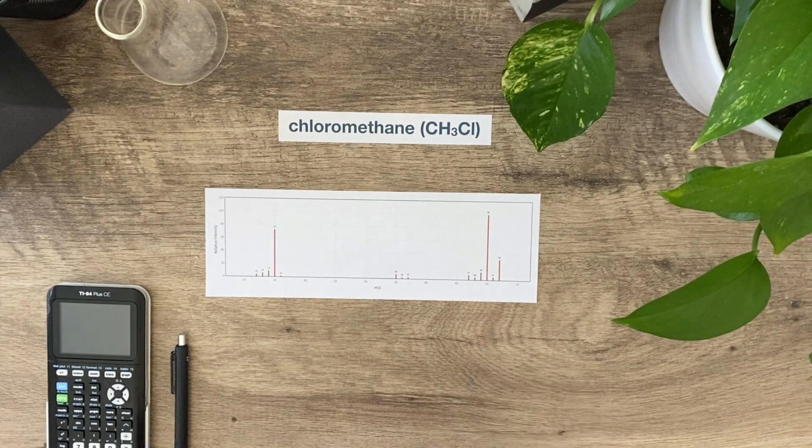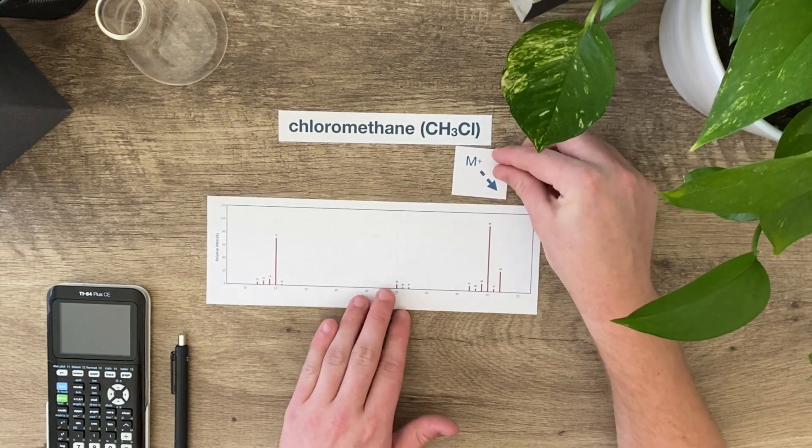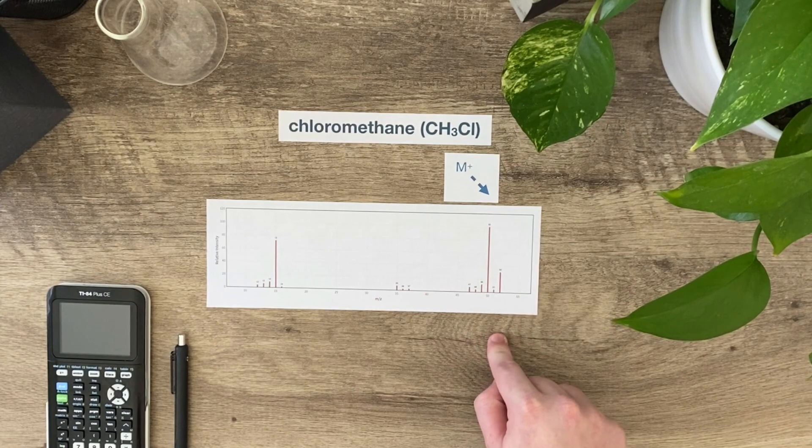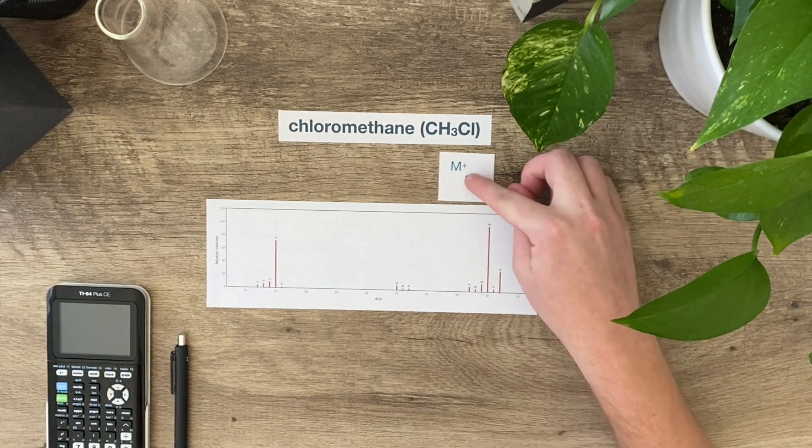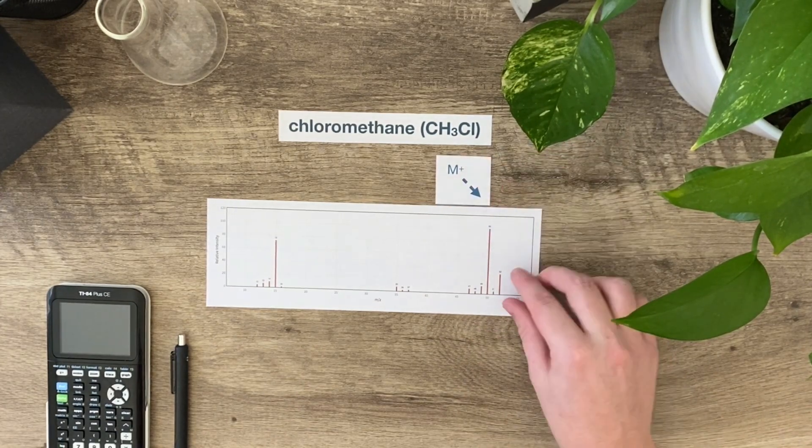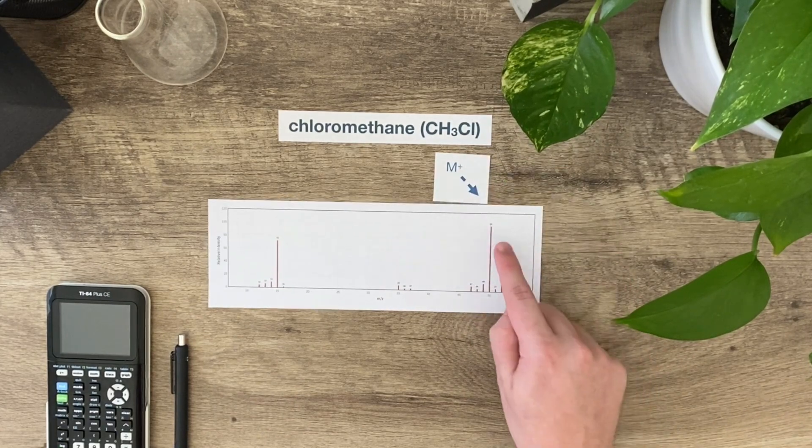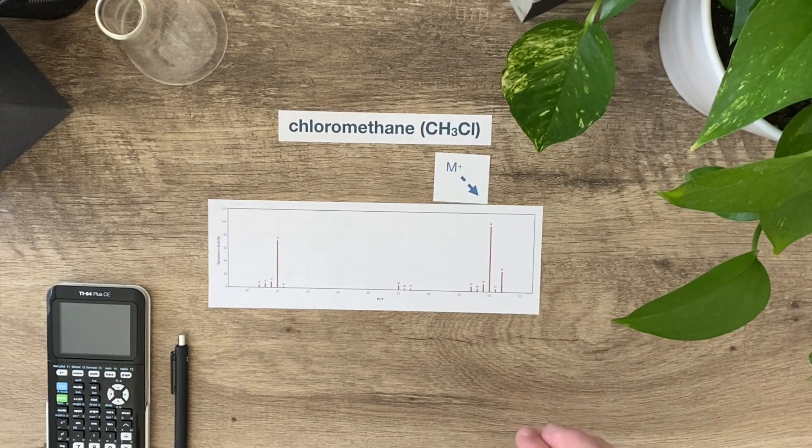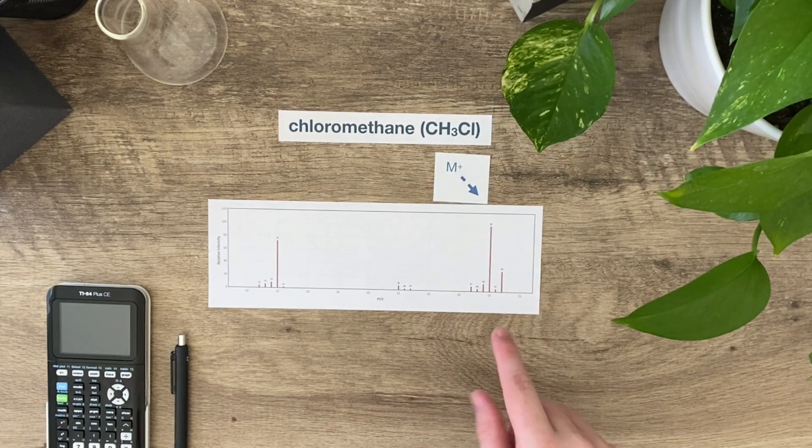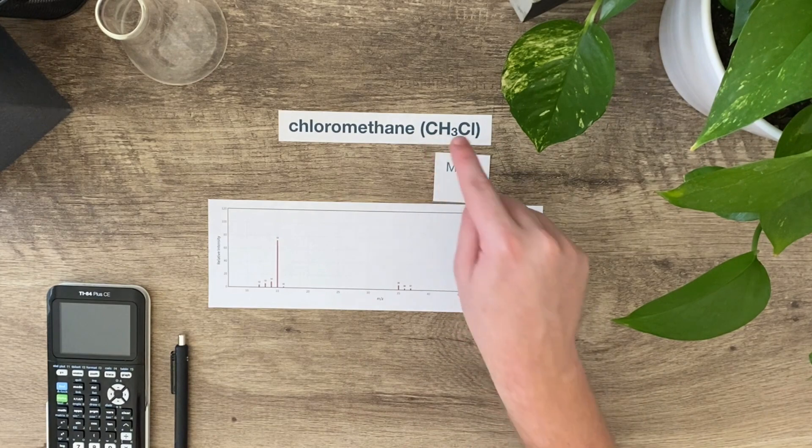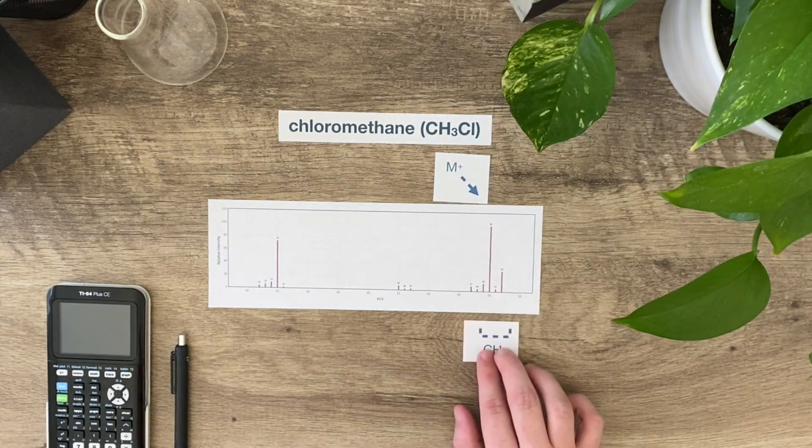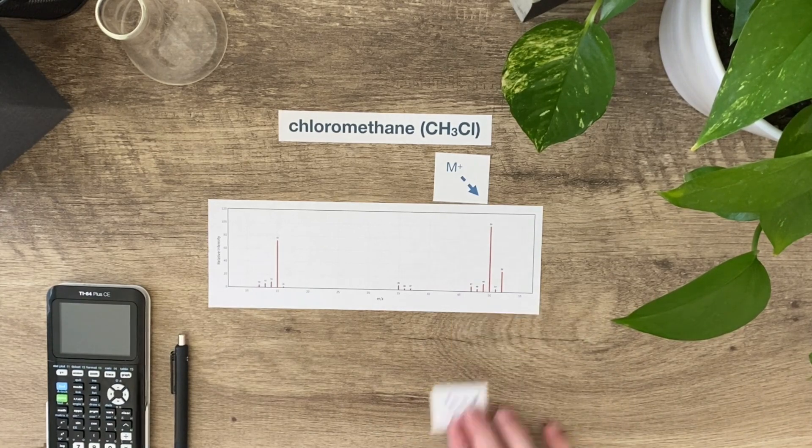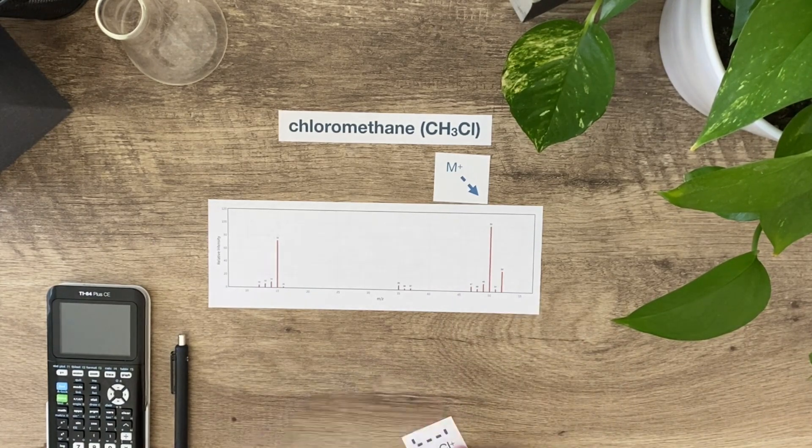We haven't named this yet, but this high peak over here at 50 is called the M+ peak. It's the molecular ion peak, which is the mass of the molecule not broken apart. So 50 here is corresponding to this entire molecule stuck together, and these other variations are just different isotopes of CH and Cl, which is why I have a little bit of variance associated with these peaks.